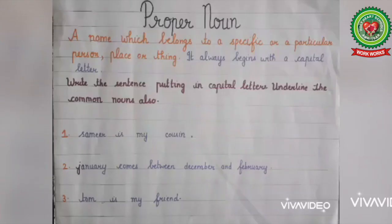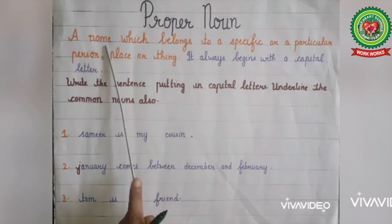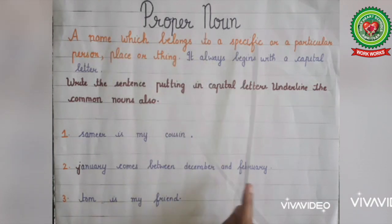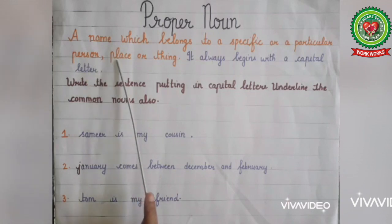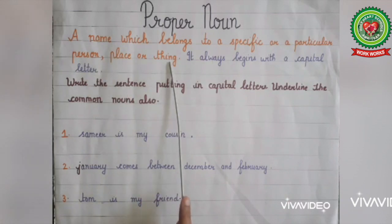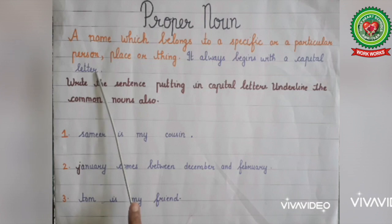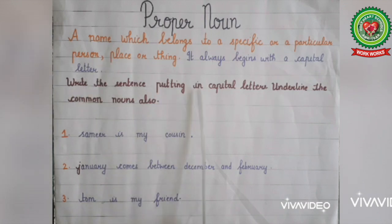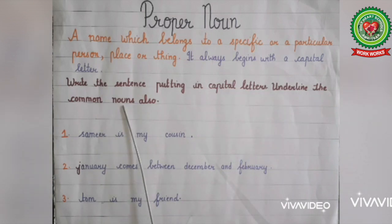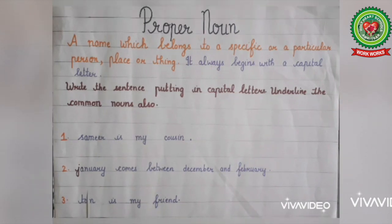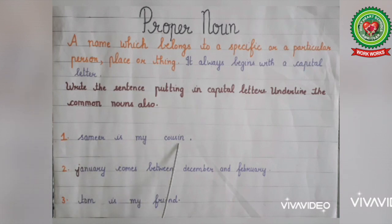A proper noun refers to a name which belongs to a specific or particular person, place, or thing, and it always begins with a capital letter. Now we will do one exercise in which we have to rewrite the sentence putting in capital letters and underline the common nouns. Read the first example: 'Samir is my cousin.'